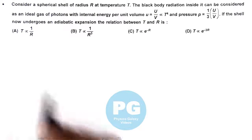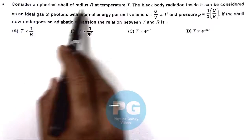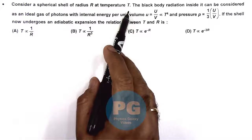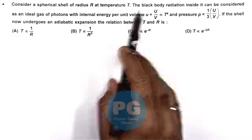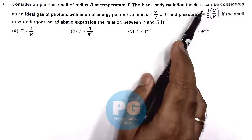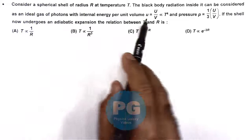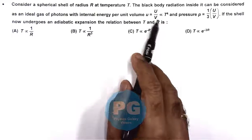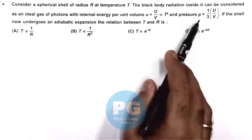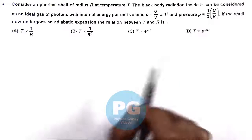In this question, we are required to consider a spherical shell of radius R at a temperature T. The black body radiation inside it can be considered as an ideal gas of photons, with internal energy per unit volume proportional to T to the power 4, and pressure is one third of U by V.